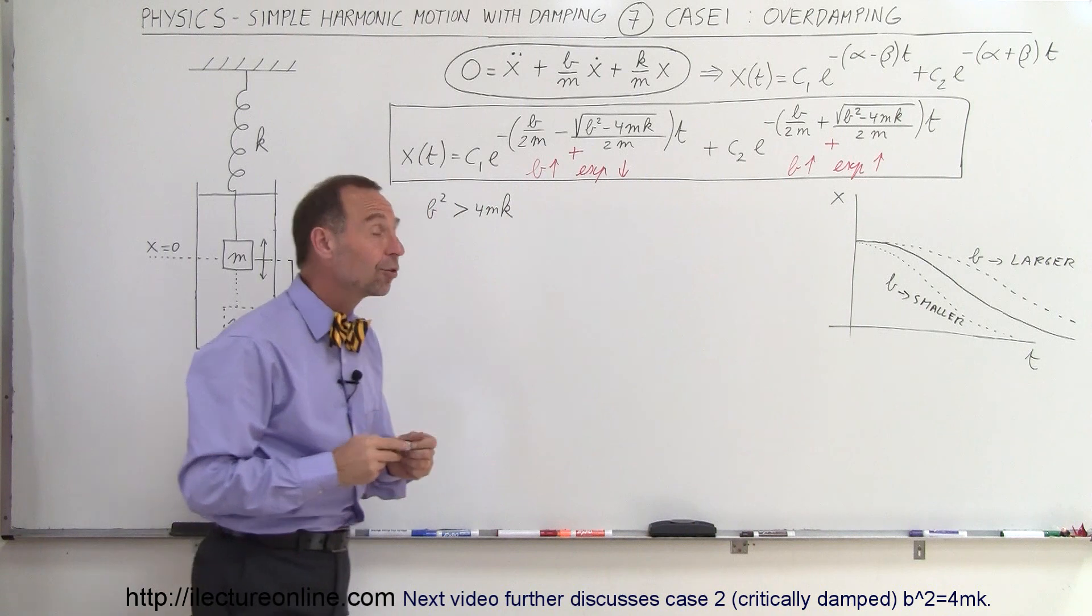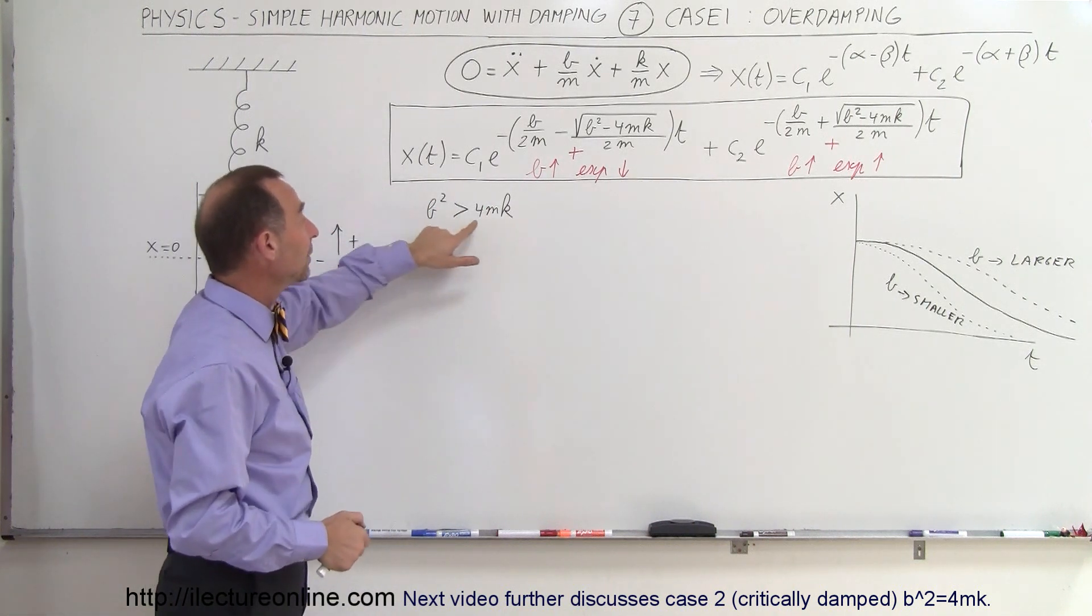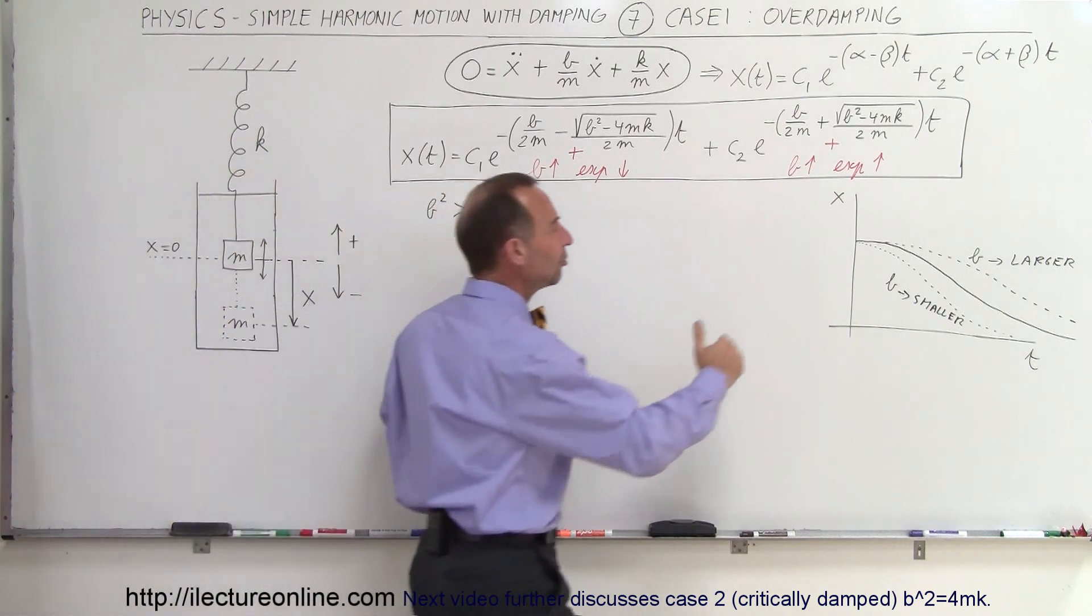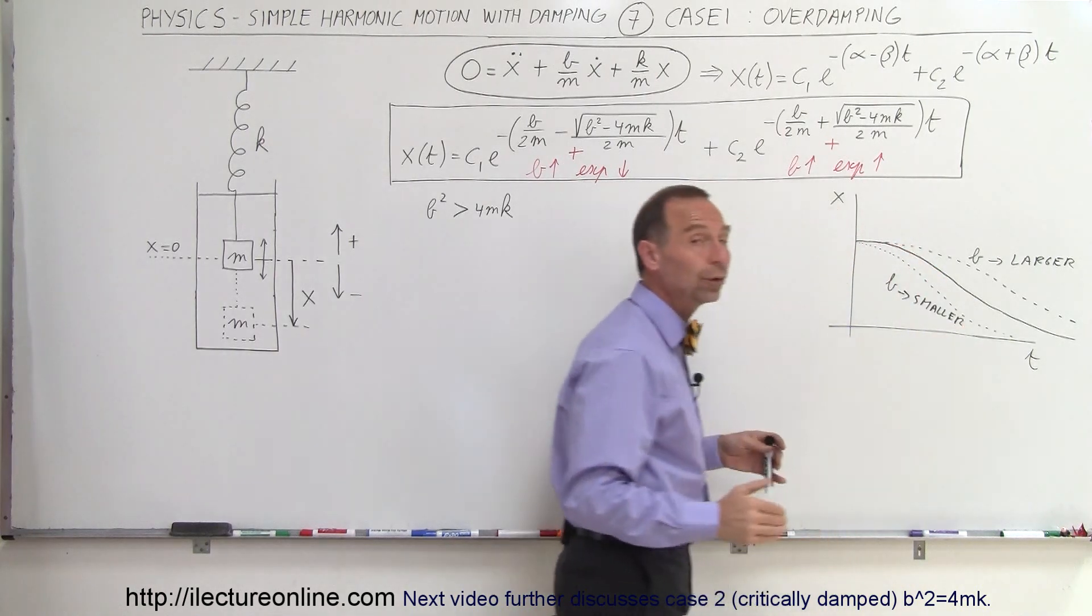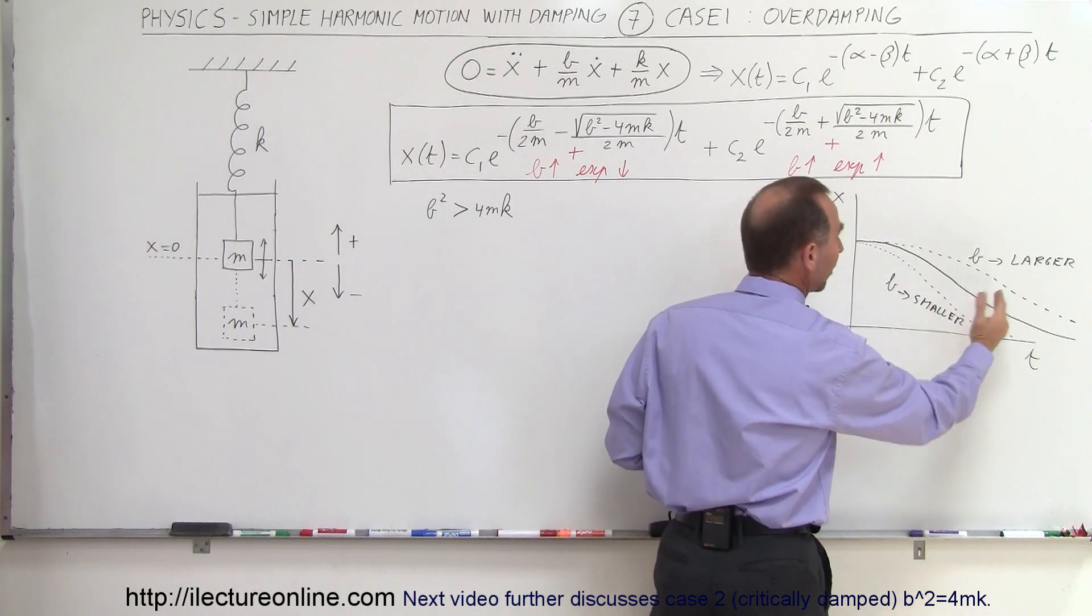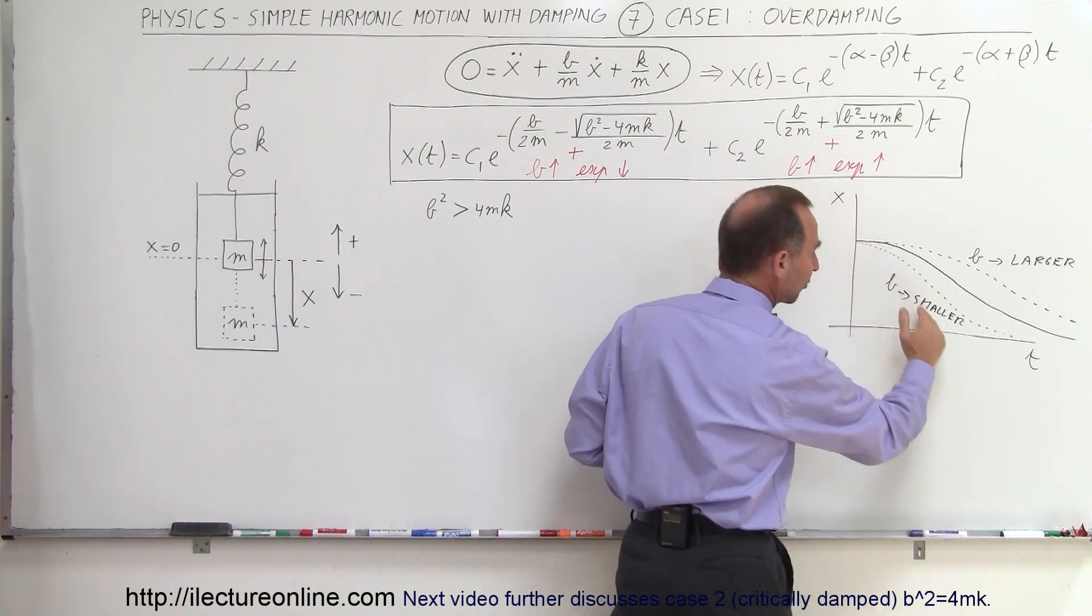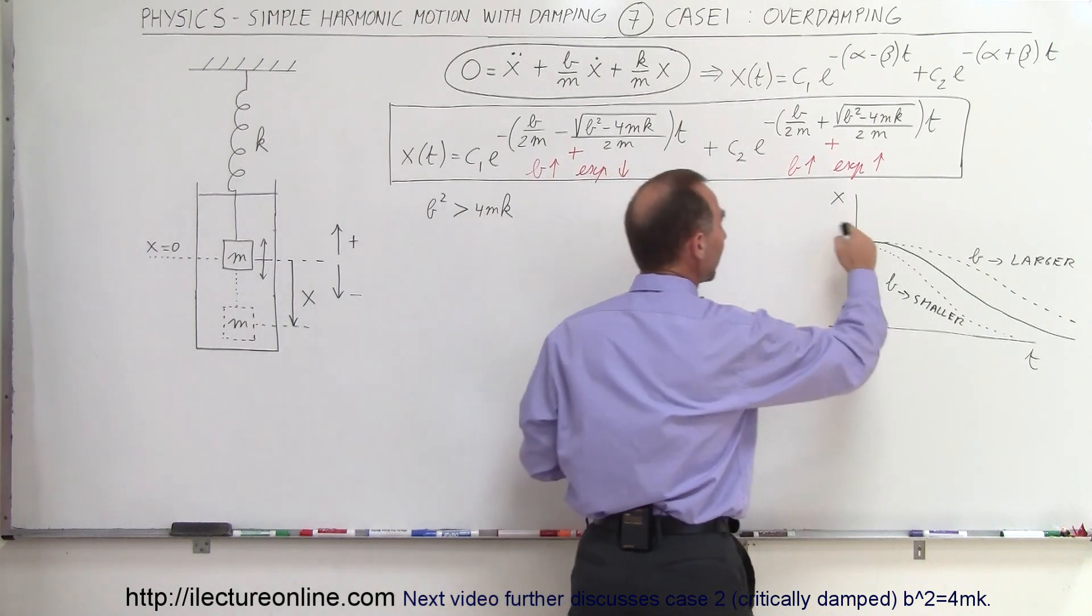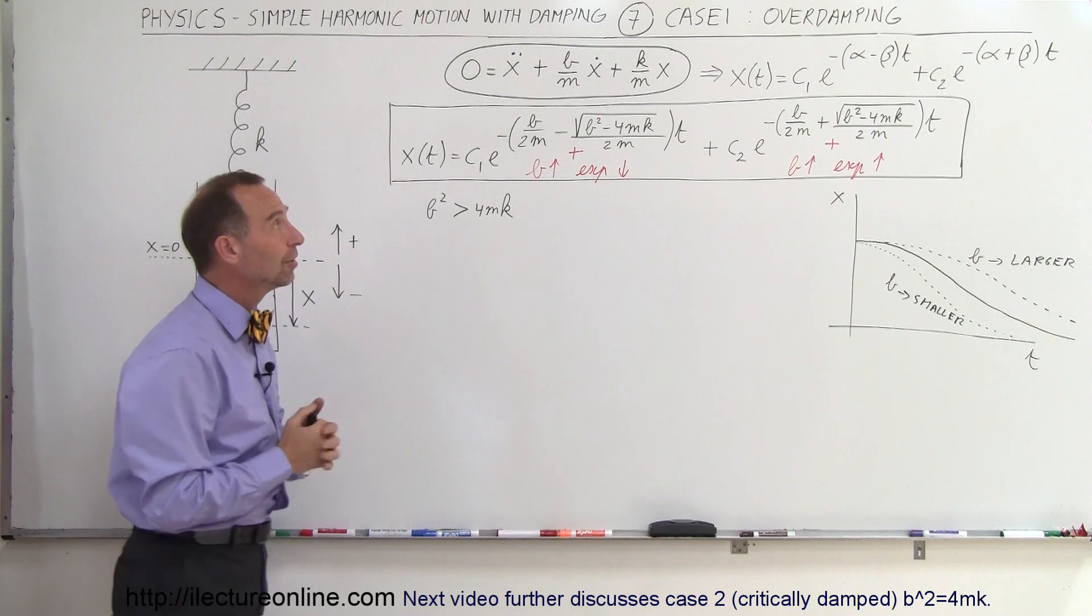And eventually, if B becomes small enough, you get to the point where B squared will become equal to 4mk. In that case, you'll have what we call the critically damped case. That means you'll get back to the equilibrium point fastest without potentially overshooting and having an oscillatory motion. So typically, as the B gets smaller and smaller and smaller, you'll get back to the equilibrium point faster and faster and faster. And eventually, when it becomes too small, when B squared becomes smaller than 4mk, then you begin to oscillate. And that's how you want to look at these different solutions.